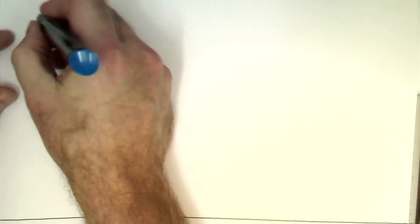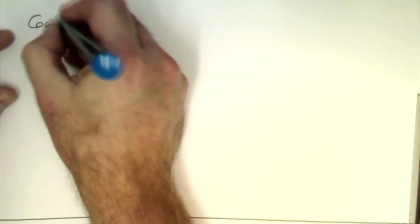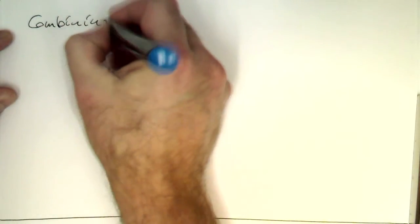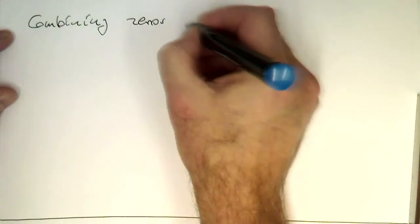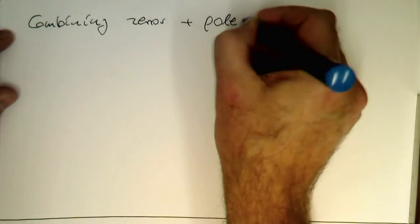So let's now combine zeros and poles. So, combining zeros and poles.